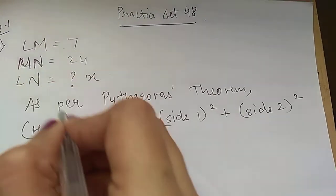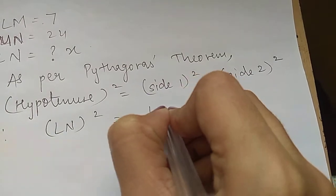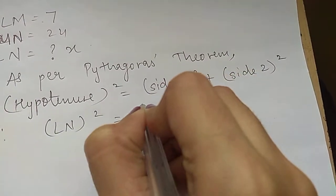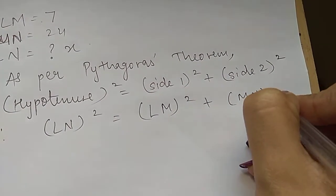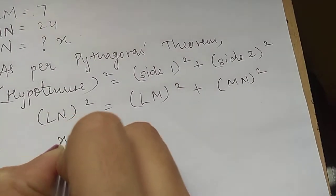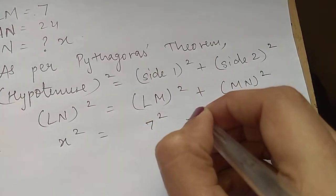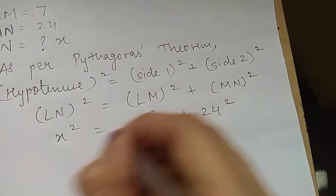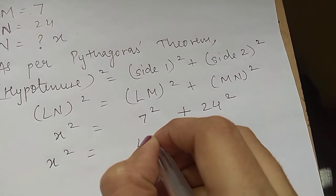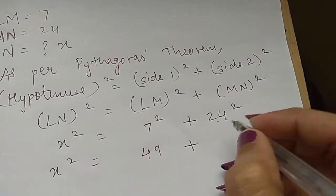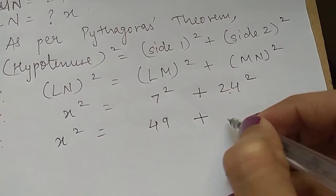Hypotenuse square equals side 1 square plus side 2 square. What is the hypotenuse? LN. Side 1 and side 2 can be any of the remaining sides. So LN is x, so x square equals 7 square plus 24 square. 7 square is 49.